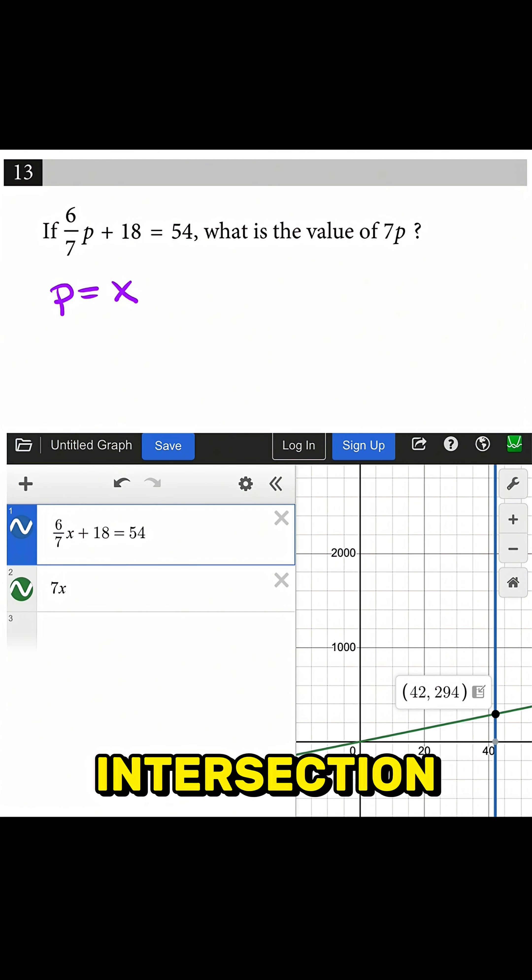So then I'm just going to go ahead and click on the intersection right there. And remember that p is x, right? So I got 42, 294. This is x, 42 is x, and this is y.